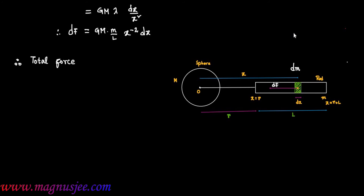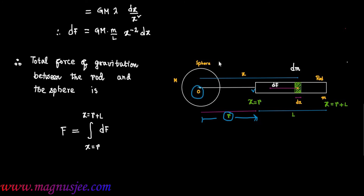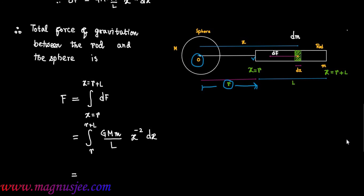Therefore, the total force of gravitation acting between the rod and the sphere is given by F equal to the integration of dF, with x going from r to r plus L. Substituting the expression for dF, this becomes the integral from r to r plus L of G·M·m divided by L times x to the power minus 2 dx. Since G, M, m, and L are constants, we bring them outside the integral.